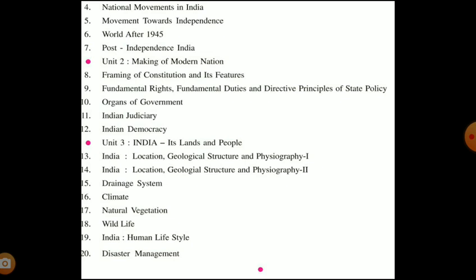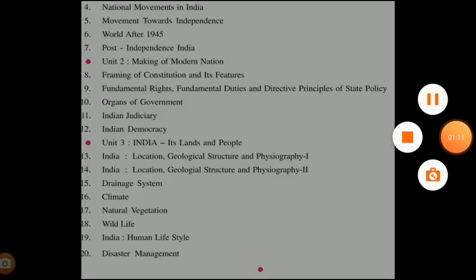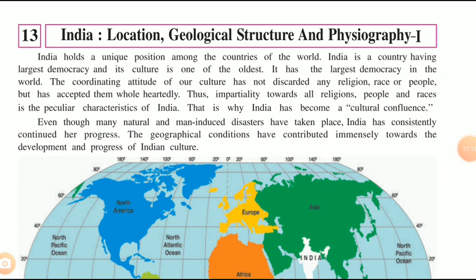Geography also covers all different types of landforms, availability of natural resources, wildlife, and many things that make a particular place either densely populated or thinly populated. In geography we have different chapters like location, geological structure and physiography parts 1 and 2, drainage system, climate, natural vegetation, wildlife, India's human lifestyle, and disaster management. Today I will be teaching chapter 13: India — location, geological structure, and physiography.